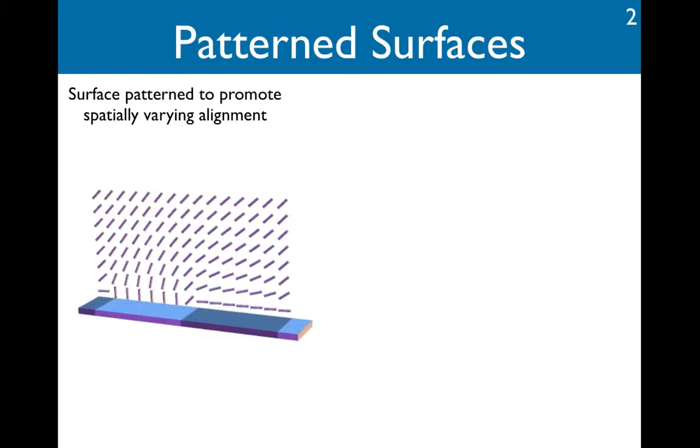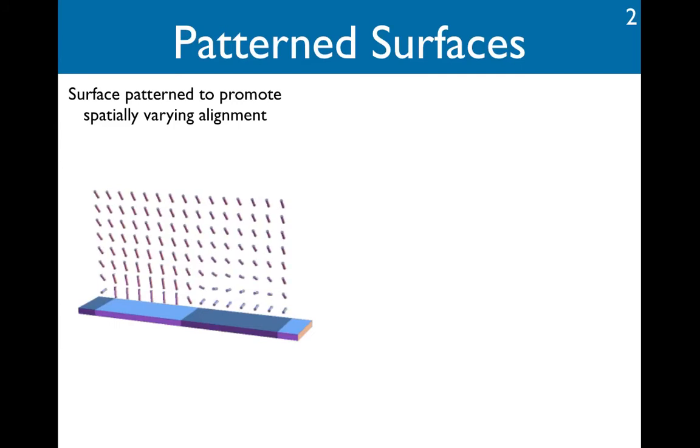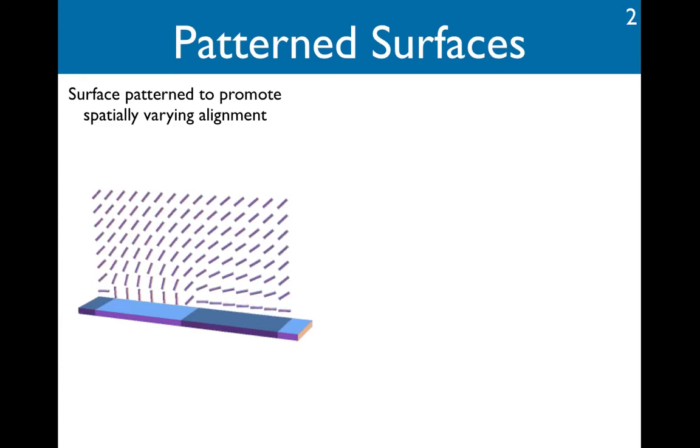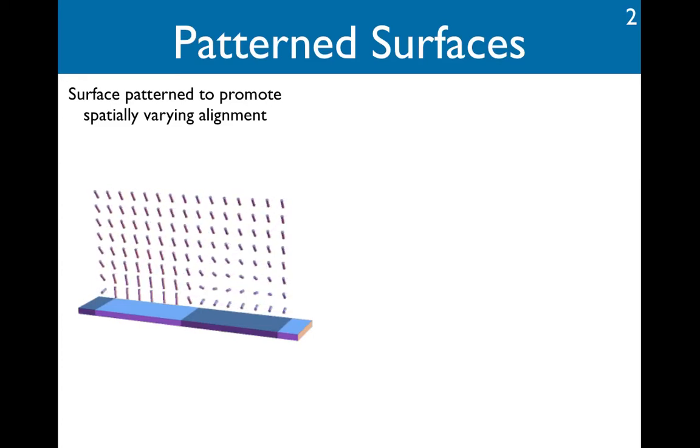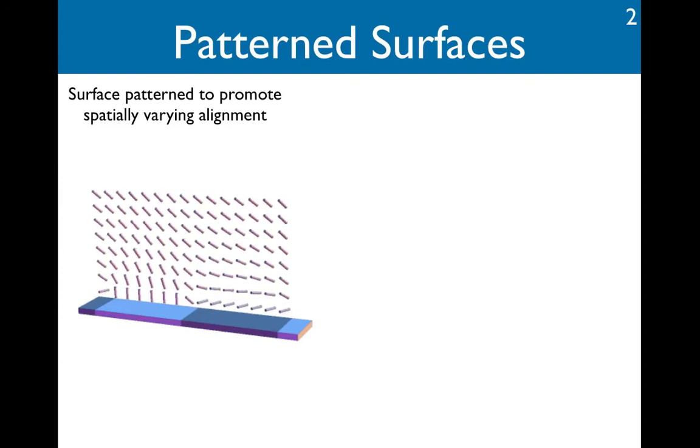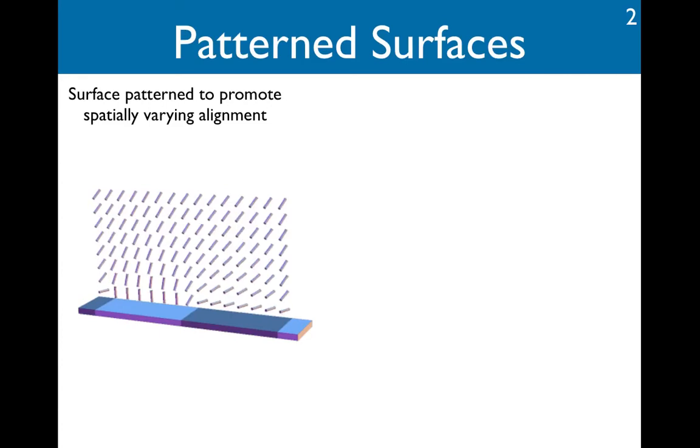Patterned surfaces, on the other hand, can help us control the alignment of the nematic by treating it, and experimentalists are now able to fabricate a variety of complicated patterns that locally promote different orientations. Here, for example, is a stripe substrate that promotes alternating planar and vertical alignment, and experimentally this is found to align the nematic along the length of the stripes.